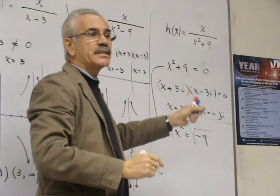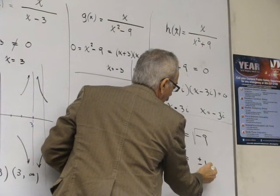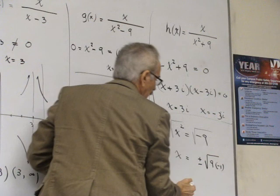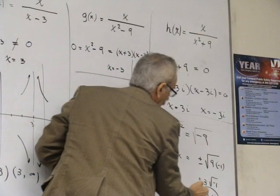So we have here x equals plus minus the square root of 9 times minus 1, which is plus minus 3 times the square root of minus 1, which is i. So plus minus 3i. Here are your solutions.